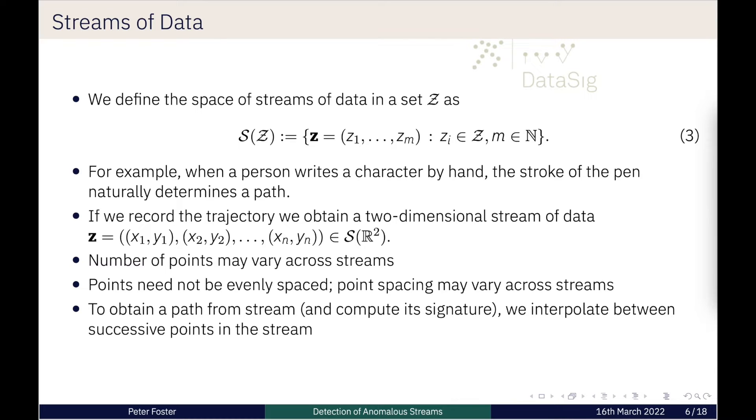When we talk about streams, what's important to note is that these are more general than time series because we may have a different spacing in the points in our streams. We need not have streams which have the same number of points, need not be evenly spaced. The spacing can also differ among streams. If we want to compute a path from a stream, then we need to apply some method of interpolation. That's the step we compute before determining the signature.